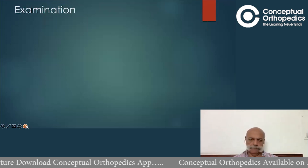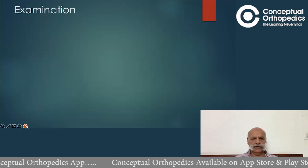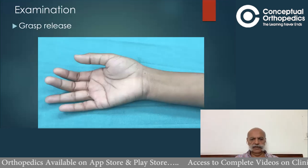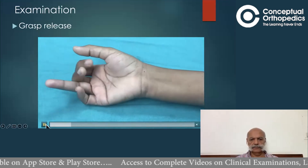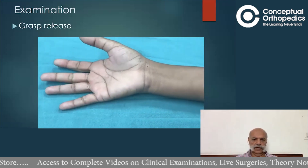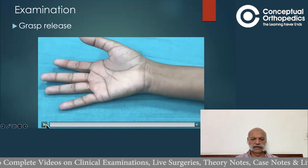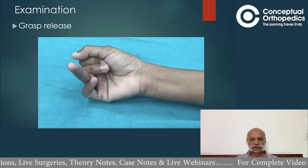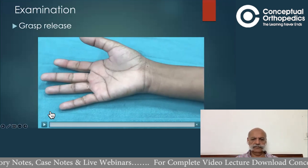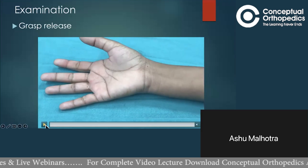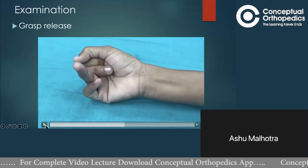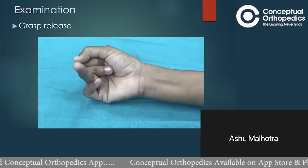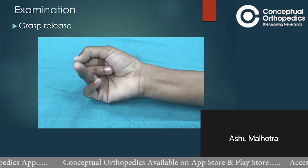Now, how will you examine this patient? You already said you will look for grasp and release. This is the video of this patient — look carefully at the ring and little fingers, as those are the damaged fingers. There is preserved flexion at the MCP joint in both ring and little fingers, but at the proximal interphalangeal and distal interphalangeal joints of the ring finger flexion is not possible. In the little finger, PIP joint flexion is possible but DIP joint flexion is not possible.